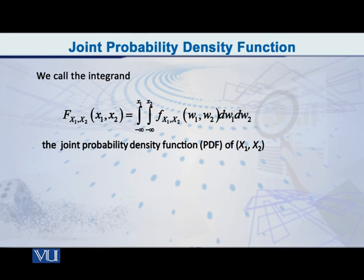When we are not inside an integral, we will write x1 and x2. If you feel that this is a tricky thing, it is not so tricky. The thing is that when it is in the definite integral, we can write anything as the variable — it doesn't matter. But when you are talking about the function independently, then you will write x1 and x2. So small f of x1 and x2 at the point x1, x2 is the joint PDF of the random vector capital X1, capital X2.